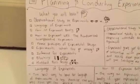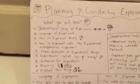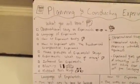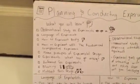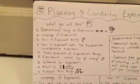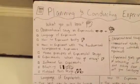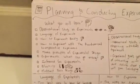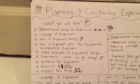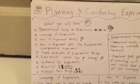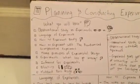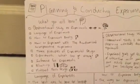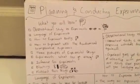What you will learn: observational study versus experiment, language of experiment, how to experiment badly, how to experiment well, the randomized comparative experiment, three principles of experimental design, what can go wrong, inference for experiments, blocking, and matched paired designs.